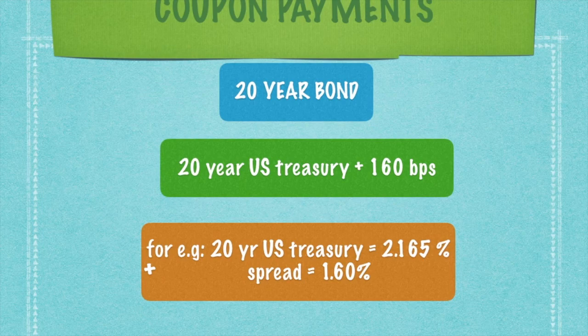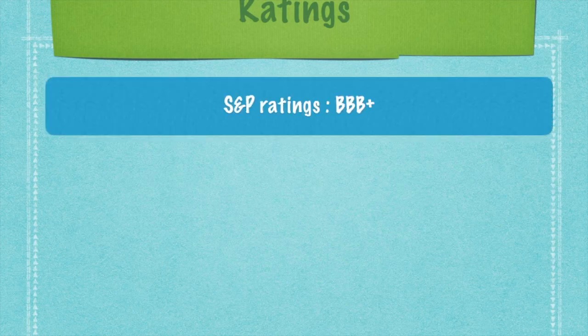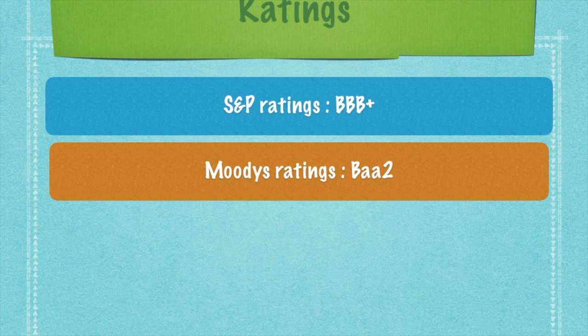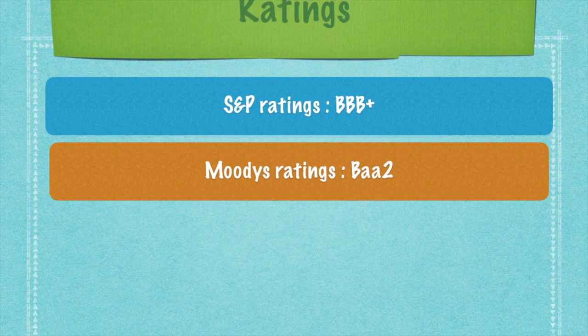That leaves us with one last aspect of any bond or debt issuance — ratings. Credit rating agency S&P has assigned a very healthy rating of Triple-B Plus, meaning the bonds are of investment grade. Moody's has assigned a rating of Baa2, implying the bonds have a very high level of creditworthiness. Both these rating agencies have given the thumbs up in terms of creditworthiness, and for all these reasons this 4 billion dollar bond issuance by RIL stands out as among the most epic bond issuances by an Indian company.